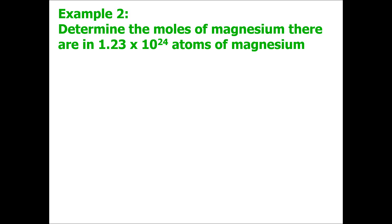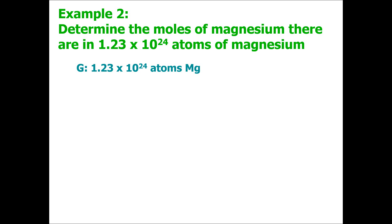Here's an example of a review question from the atomic structure unit. If I ask you to determine the moles of magnesium in 1.23 × 10²⁴ atoms of magnesium, I hope you recognize this as a dimensional analysis problem. Whenever we have a dimensional analysis problem, we want to start with G, W, and R. The given is the only number given to you: 1.23 × 10²⁴ atoms of magnesium.